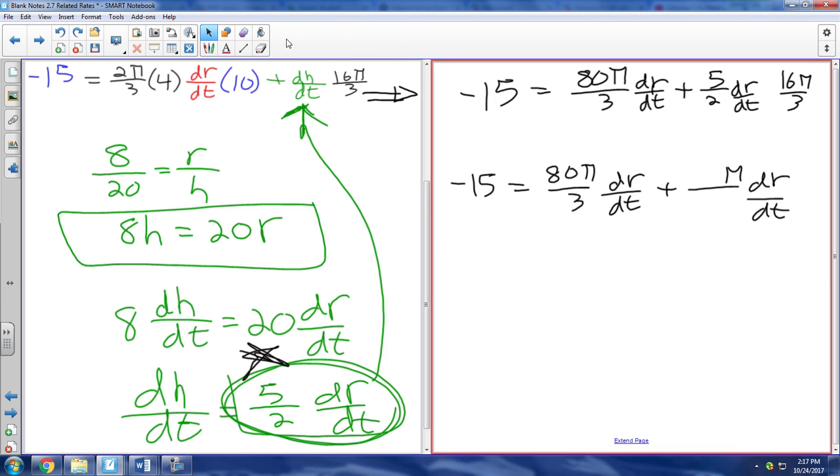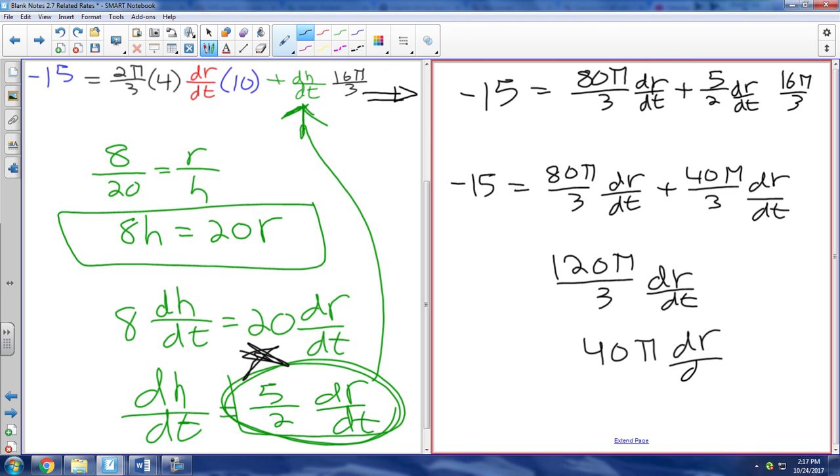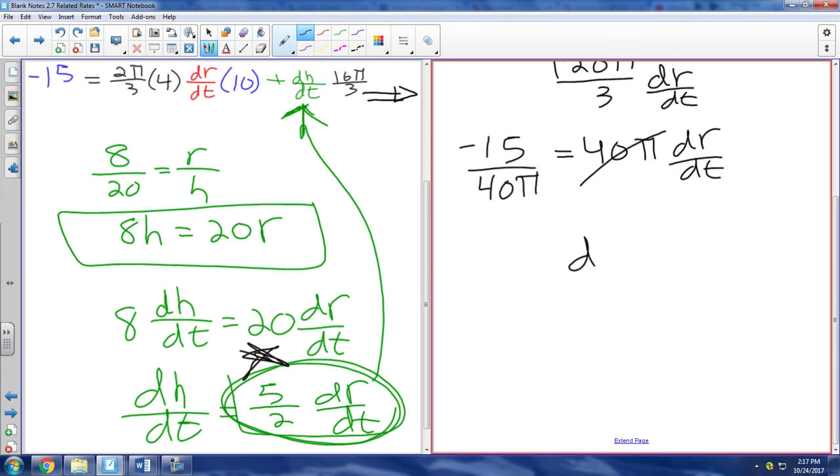Now we can actually combine some stuff together. So we have 40 pi over 3. So 80 and 40, that's 120 pi over 3 times DR over dt. And 120 divided by 3 is 40 pi DR dt equals negative 15. How are we going to get DR dt alone? This is what we're looking for this whole time. We're going to divide by 40 pi. So if we divide by 40 pi on both sides, we have our final answer. DR dt equals DR over dt equals negative. If we divide this by 5, we get 3. If we divide this by 5, we get 8 pi. And so that should be your DR dt.